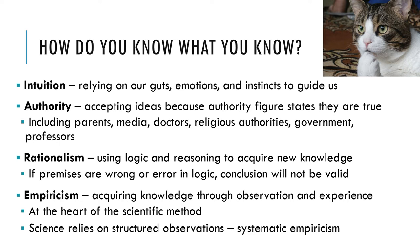Empiricism. Empiricism involves acquiring knowledge through observation and experience. Many of you may have believed that all swans are white because you've only ever seen white swans. For centuries, people believed the world is flat because it appears to be flat — some people still think it is. These examples and the many visual illusions that trick our senses illustrate the problems with relying on empiricism alone to derive knowledge. We're limited in what we can experience and observe, and our senses can deceive us, as we've all seen with optical illusions.